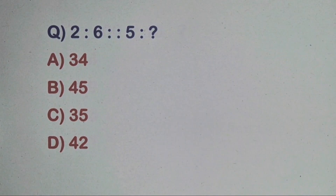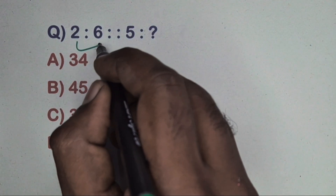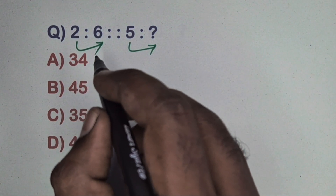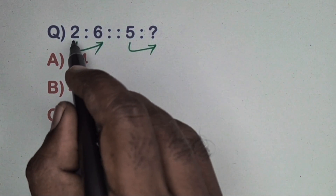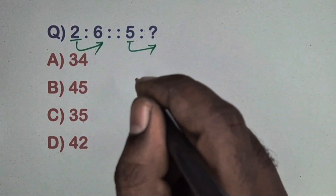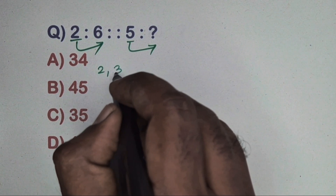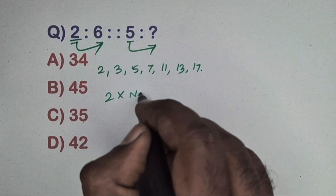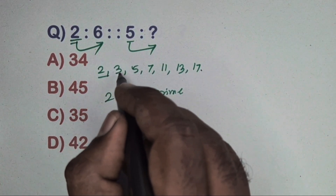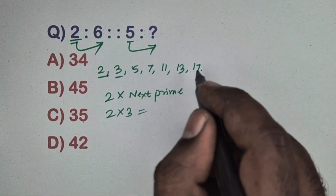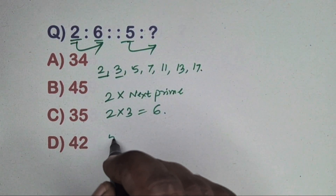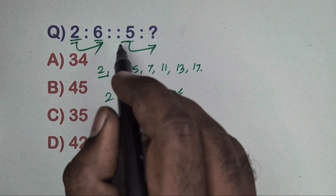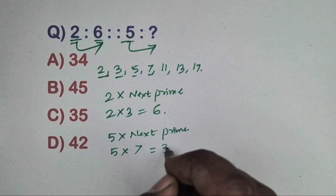Next question: 2 is related to 6 and 5 is related to which number? Since 2 and 5 are prime numbers, this is a prime number relation. The prime numbers are 2, 3, 5, 7, 11, 13, 17. Take 2 and multiply by the next prime number 3: 2 into 3 is 6. Same way, 5 into next prime 7 equals 35. Option C is the correct answer.